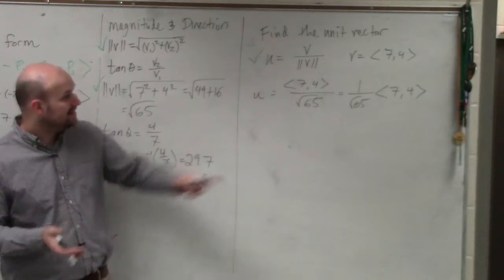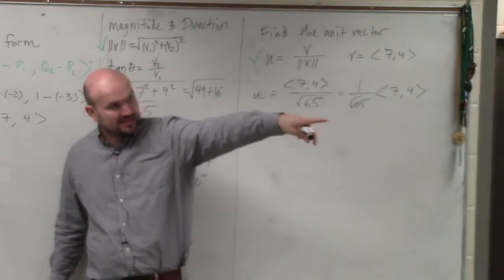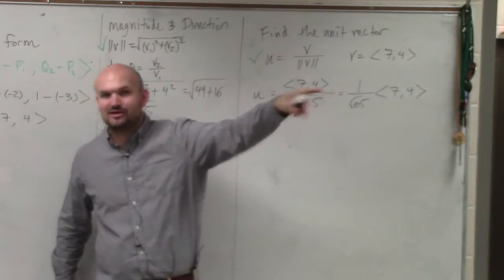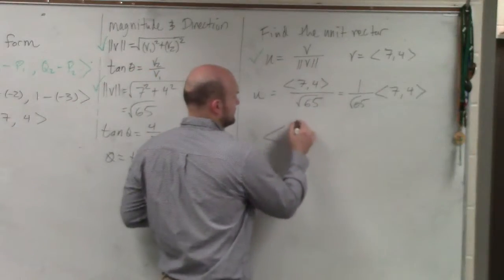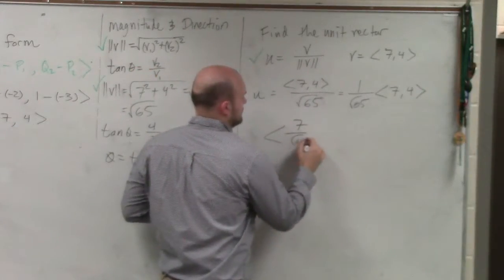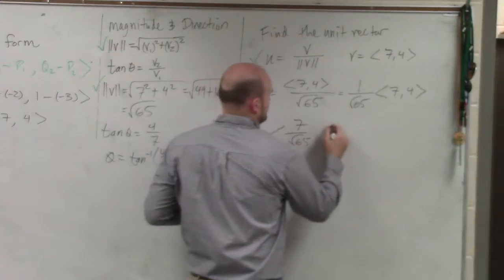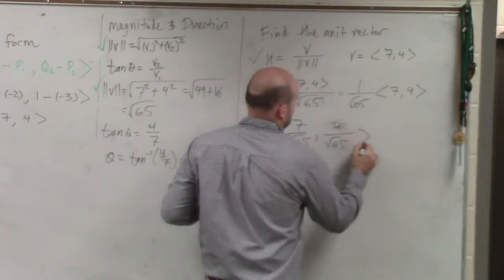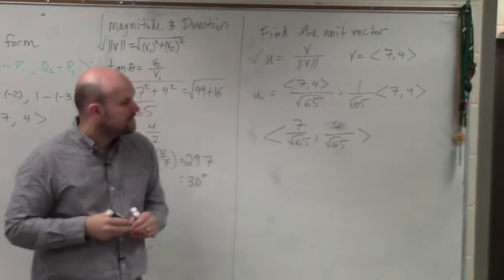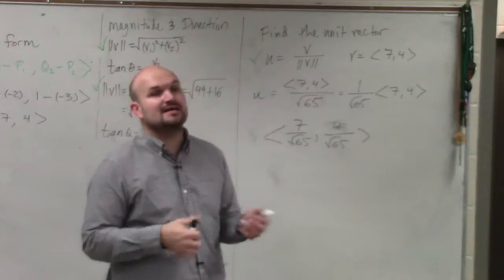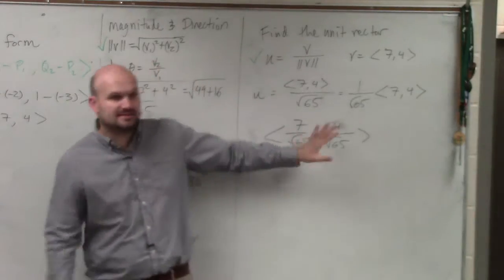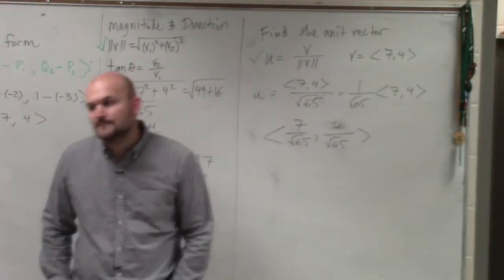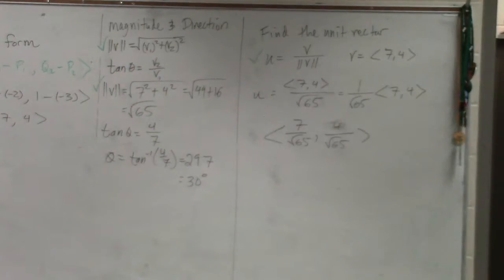So in technical terms, I could rewrite this as 1 over square root of 65 times 7 comma 4. And then I could treat it just like multiplication like I did over there. See how I did that? Like I was preparing you for this? So it's the same thing. And you guys will be happy to know on your quiz and on your test, I am not going to ask you to simplify this. We can just leave our radicals in the denominator. So that's our unit vector.